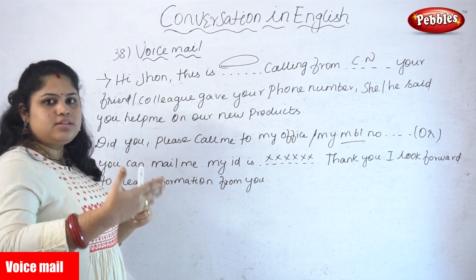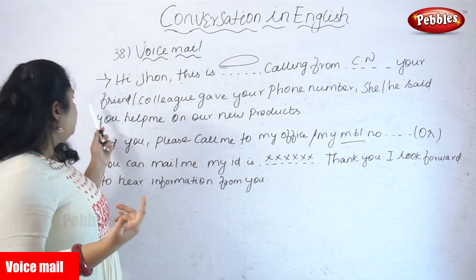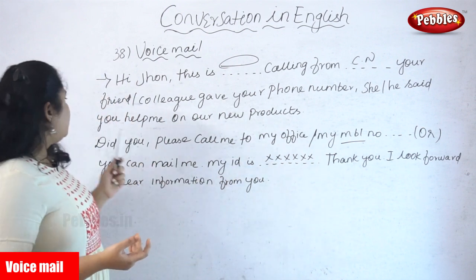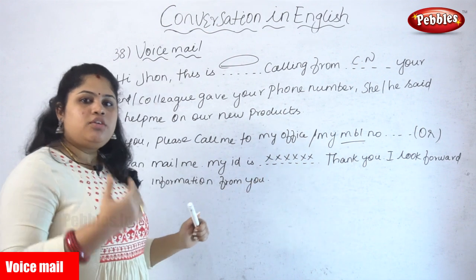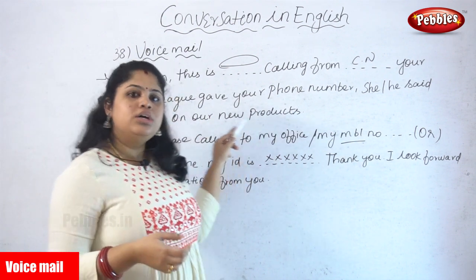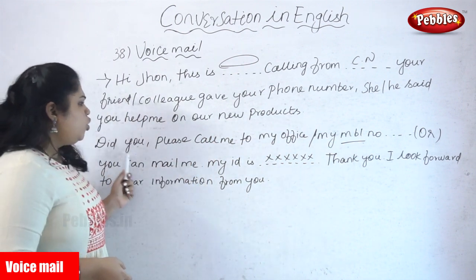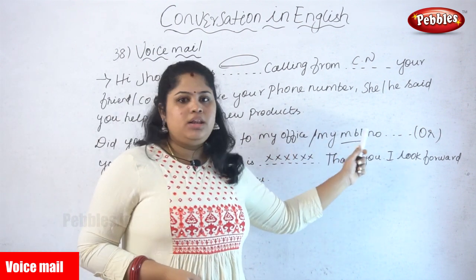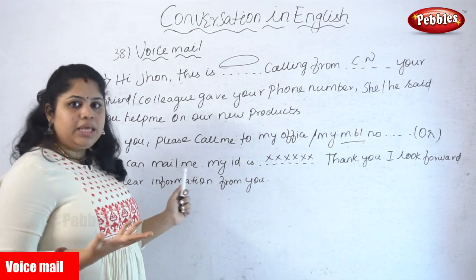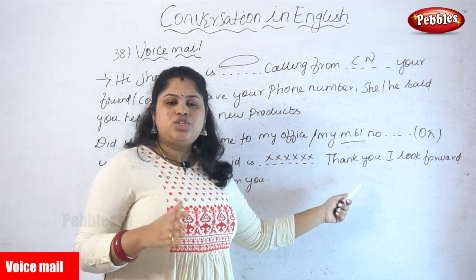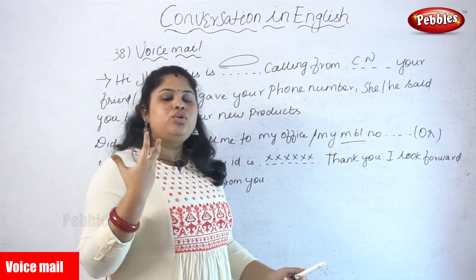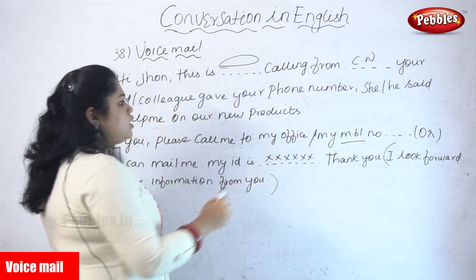Maybe John is also a personal assistant for the other company — you can assume whatever fits. Your friend, colleague, or office mate gave your phone number, and Sheila says 'your office mate gave me your number, mentioning that you would definitely be able to help with our new products.' She continues: 'Could you please call me on my office number or mobile number?' — giving options. She also leaves a mail ID, and she ends with 'thank you,' adding extra value by saying 'I look forward to hearing the information from you.'